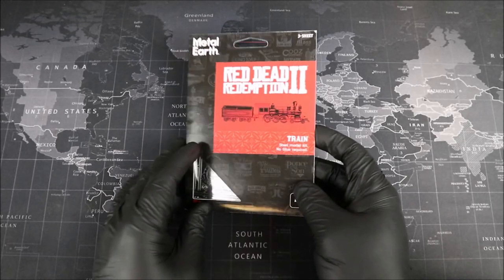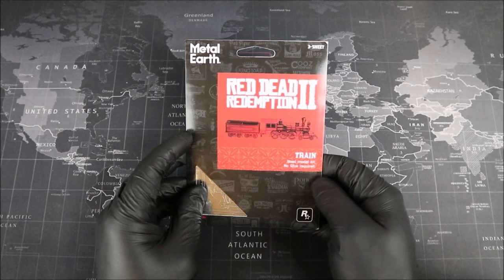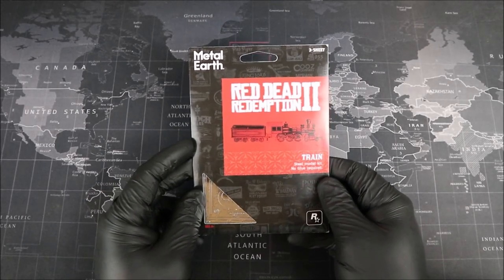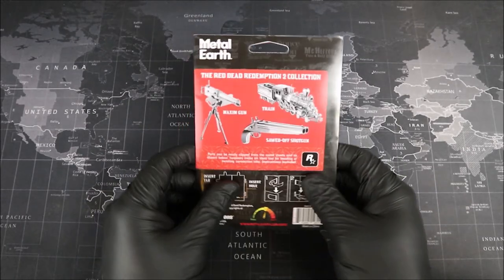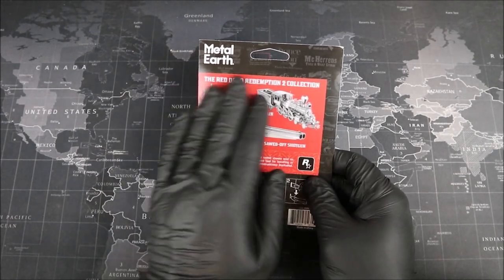Group Builders, welcome to the workbench. We have our Metal Earth Red Dead Redemption 2 train in some pretty awesome Rockstar packaging. Let's go ahead and take a look at the back. On the back, we have that Metal Earth logo, followed by a look at some other models in the series.